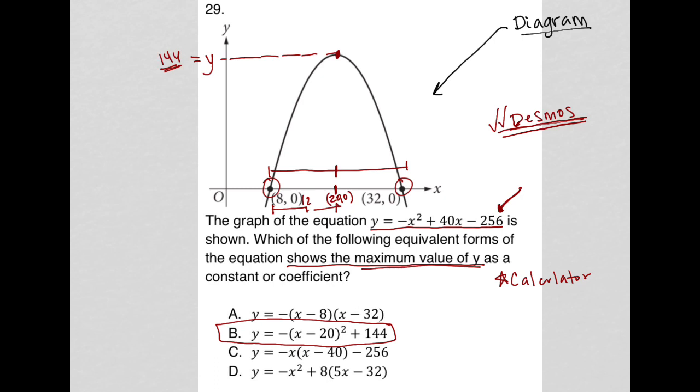And again, the question says not just that the equation answer has to be equivalent, but it has to be equivalent and show the maximum value. So if there were two options that had 144, I'd try them out and do some work to make sure which one was equivalent, but only one of them actually says 144. So choice B has to be correct.